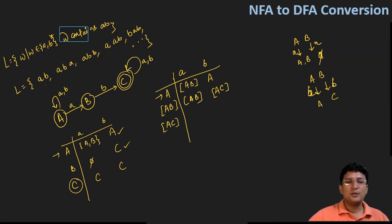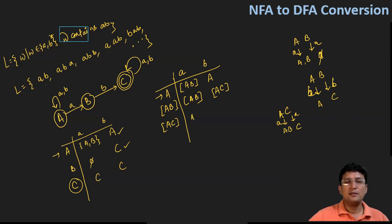Now showing transitions from state AC. AC on symbol 'a': A on 'a' goes to AB, and C on 'a' goes to C. Taking the union of these two gives ABC — another new state.